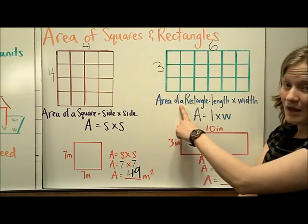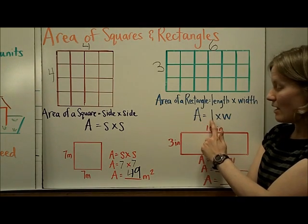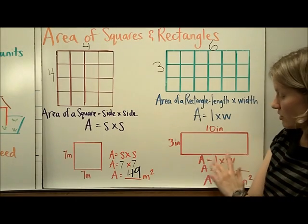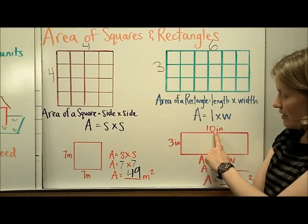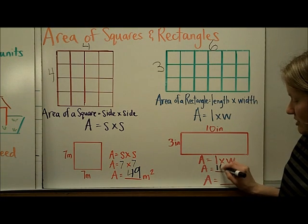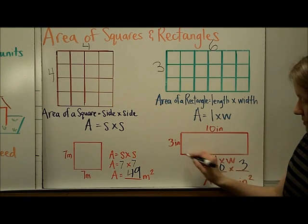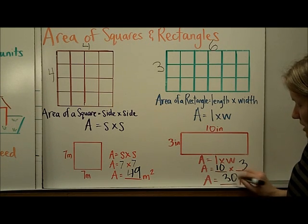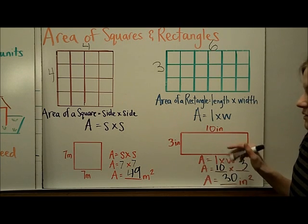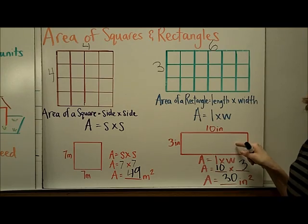So the formula for the area of a rectangle is length times width, or we might abbreviate it L times W. So in this rectangle that we have here where the grid lines are not drawn, we can multiply the length times the width, so we'll replace the L with the length which is 10, and the width which is 3, 10 times 3 would be 30 square inches. And so if we were to fill in the grid lines, we would find 30 square inch blocks inside this rectangle.